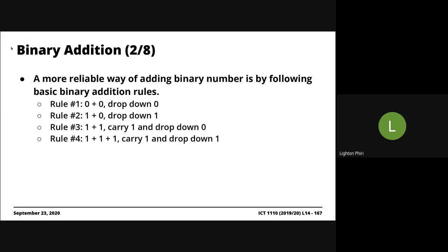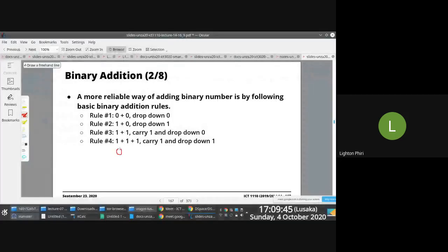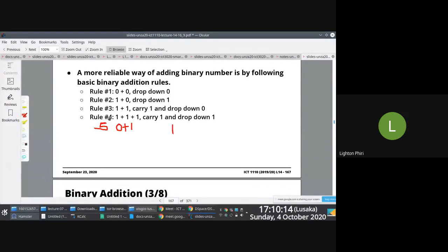When we add a zero bit and a zero bit, we get zero. When we add a one and a zero, we get one. A zero and a one is the same as a one and a zero — we drop down one. When combining a one and a one, you carry one and drop zero; the answer is zero with a remainder of one. And importantly, when you add one and one and one, your answer is one, you drop one, and carry one as the remainder to the next place.